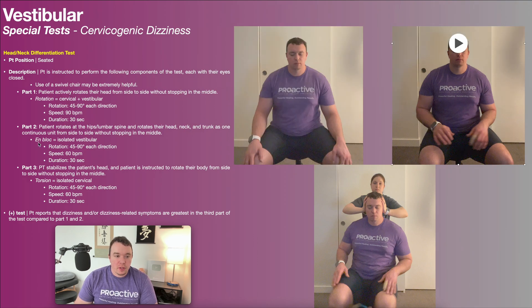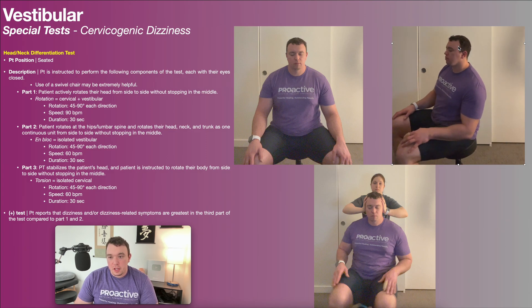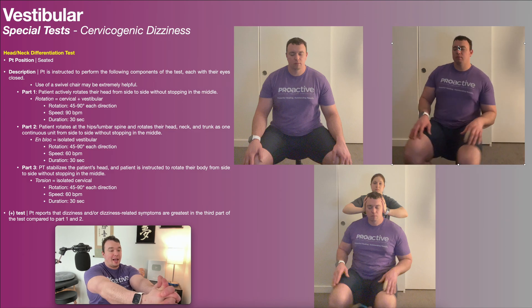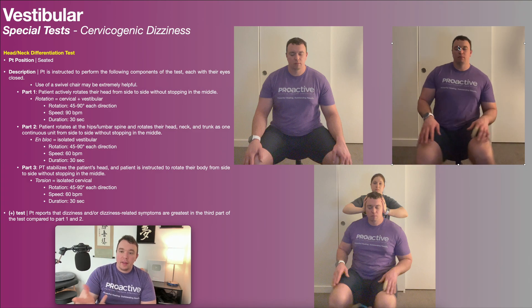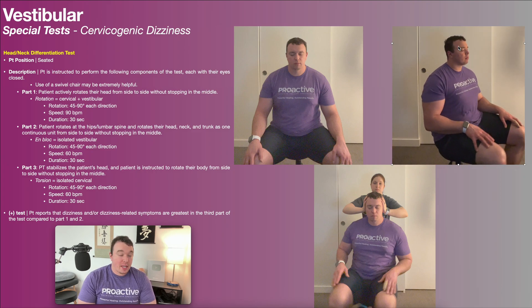In part two, referred to in the literature as 'en bloc' — Latin for 'all as one unit' — the motion looks very similar to the VOR cancellation test covered in other videos. This is where we're totally isolating vestibular function, so there's no cervical component here. The patient rotates at the hips and lumbar spine, moving their head, neck, and trunk as one continuous unit from side to side without stopping in the middle. As you can see, it's very useful to do this in a swiveling chair.